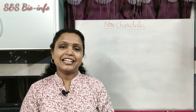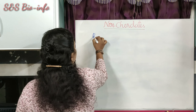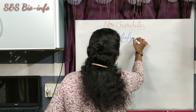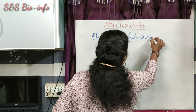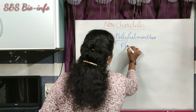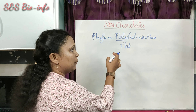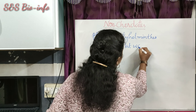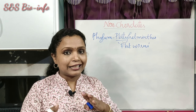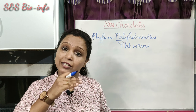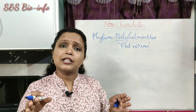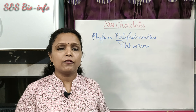First of all, let's learn about the phylum Platyhelminthes. 'Platy' means flat and 'helminth' means worm, so they are commonly known as flatworms. They have a dorsoventrally flattened body — both the dorsal and ventral sides are flattened — and they look like a leaf or tape-like structures.